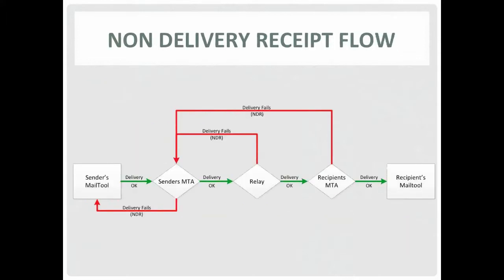Here's a flow diagram for a typical email delivery. The green arrows show the normal delivery path: sender's mail tool, sender's MTA, a relay, recipient's MDA, and the recipient's mail tool — if everything goes well. But if any part of this chain can't deliver the message, for example if the sender's MTA can't send to the relay, the sender's MTA will send a message back to the sender. Any point in this process can fail, and the message will tell you which part failed, when, and why.